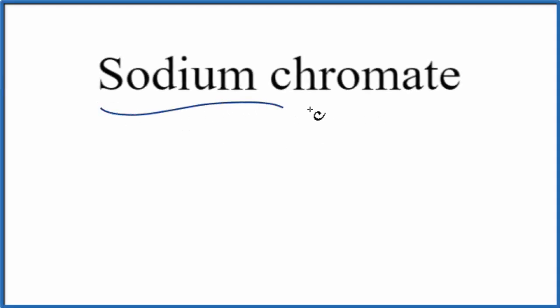To write the formula for sodium chromate, let's first write the element symbol for sodium. So on the periodic table, sodium, that's N-A.